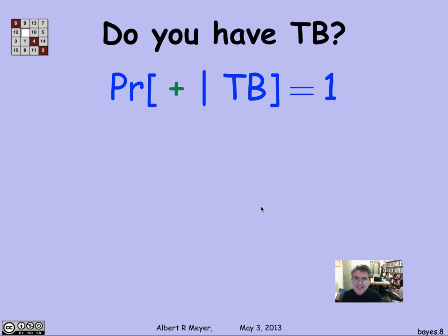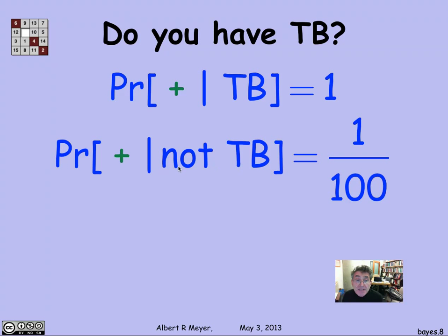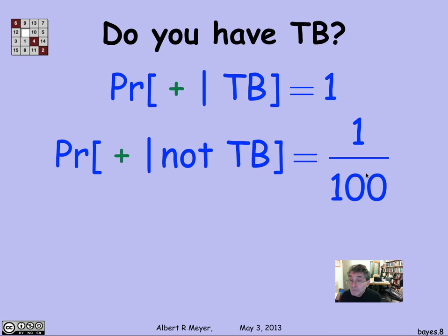Let's translate the information we have about the test into the language of conditional probability. First, the test is guaranteed to get it right if you have TB. So given that you have TB, the probability that the test returns a positive result is 1. Given that you don't have TB, the probability that the test says you do have TB is only 1 in 100, because 99% of the time it correctly says you don't have TB, and 1% of the time it says you do.